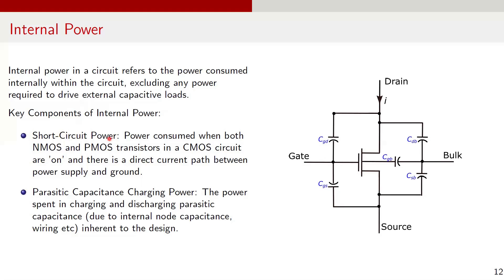The first component is short circuit power. As discussed earlier, this dissipation occurs during input transitions when both NMOS and PMOS transistors in a CMOS circuit conduct simultaneously for a brief moment, creating a direct current path between VDD and ground. The second component is parasitic capacitance charging power — the power spent in charging and discharging parasitic capacitances inherent to the design. These parasitics include internal load capacitances arising from transistor gates, diffusion regions, and wiring within the circuit. The picture here shows the capacitances intrinsic to an NMOS transistor.